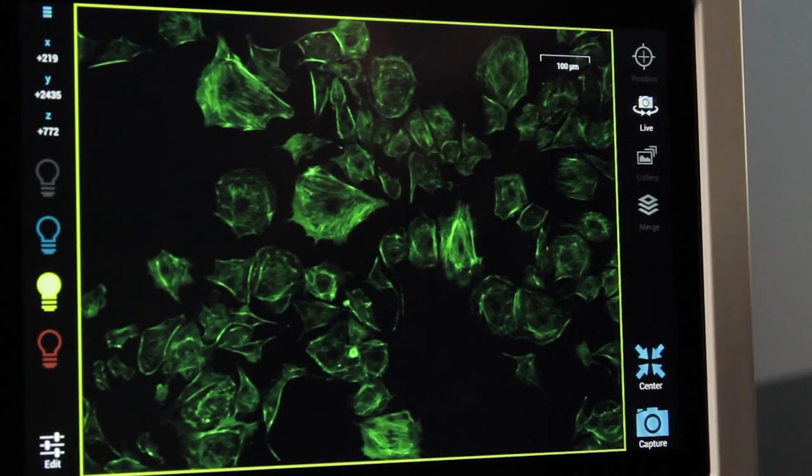Image cells in tissue culture dishes, flasks, or on a slide. Move Zoey's stage and change magnification with a simple swipe on the touch screen.